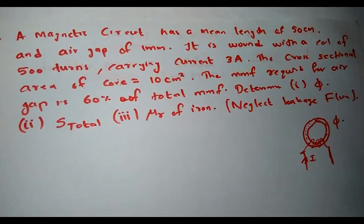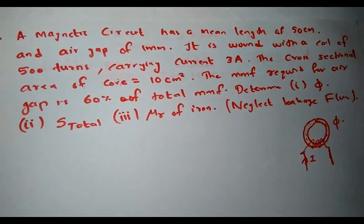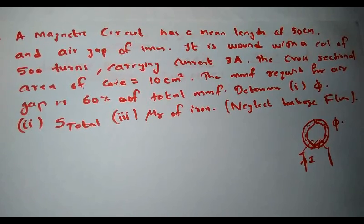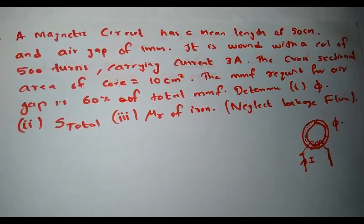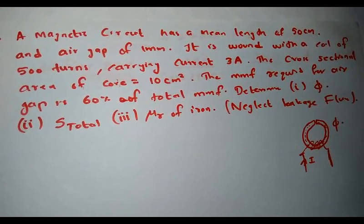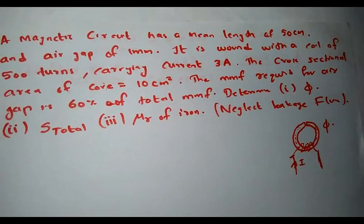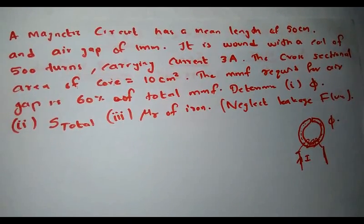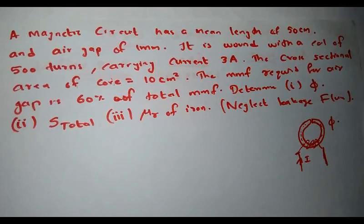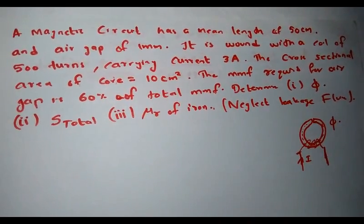This is another important problem from the concept of magnetism. A magnetic circuit has a mean length of 50 cm and an air gap of 1 mm. It is wound with a coil of 500 turns carrying a current of 3 amperes. The cross-sectional area of the core is 10 cm². The MMF required for the air gap is 60% of the total MMF. We have to determine the flux phi, the total reluctance, and the mu r of the iron, and we have to neglect the leakage flux.